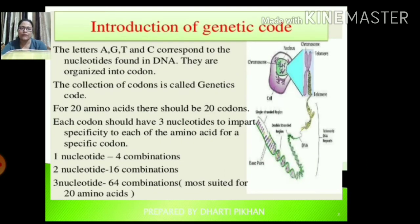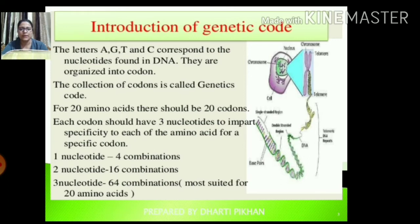In the introduction to genetic code, the letters A, G, T, and C correspond to nucleotides found in DNA and they are organized into codons. The collection of codons is called the genetic code. For 20 amino acids, there should be 20 codons, because for each amino acid we have a codon individually. Each codon should have 3 nucleotides to impart specificity to each amino acid.